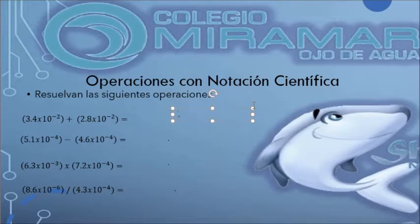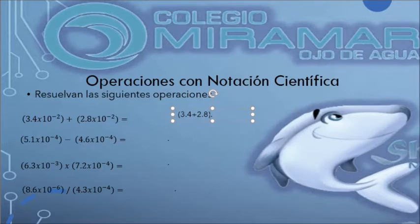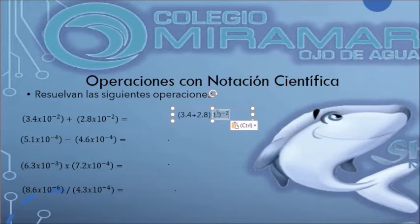Vamos a realizar el primero. Seguimos la misma operación: vamos a realizar la suma del coeficiente, que en este caso es la parte decimal. En este caso sería 3.4 más 2.8. Lo encierro en paréntesis y todo esto lo voy a multiplicar. También se sobreentiende que cuando tenemos cantidades no separadas, quiere decir que es una multiplicación. Voy a copiar la misma base.